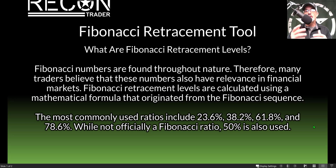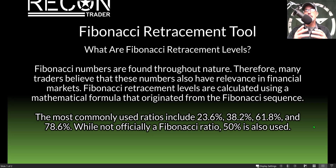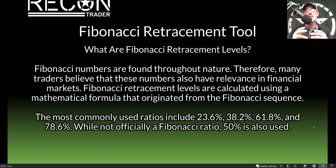Therefore many traders believe that these numbers also have relevance in the financial markets. Fibonacci retracement levels are calculated using a mathematical formula originated from the Fibonacci sequence. The most commonly used ratios include 23.6%, 38.2%, 61.8%, and 78.6%. And while not officially a Fibonacci ratio, the 50% level is also used.